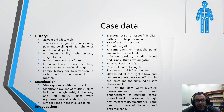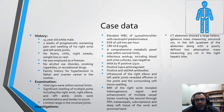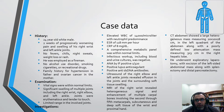MRI of the right wrist revealed a heterogeneous signal and enhancement of multiple carpal bones involving the second through fifth metacarpals, subcutaneous and deep soft tissue of the wrist and proximal hand. CT abdomen showed a large heterogeneous mass measuring 20 x 10 x 18 cm in the left quadrant of the abdomen, along with a poorly defined low-attenuation mass measuring 3 x 3 cm in the right hepatic lobe.